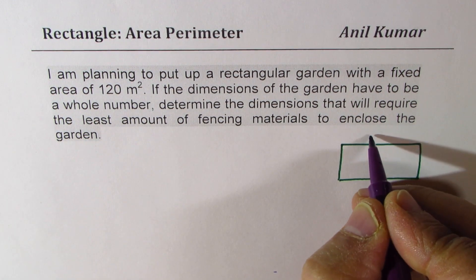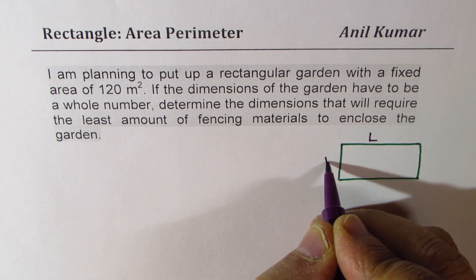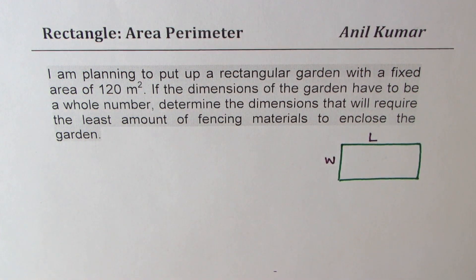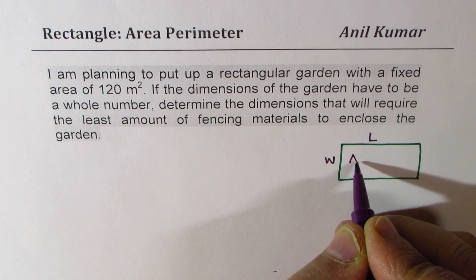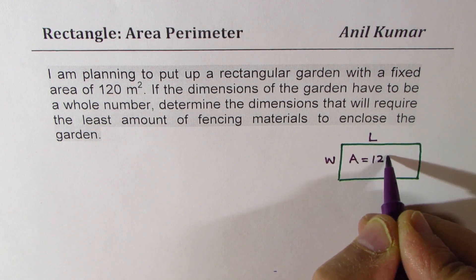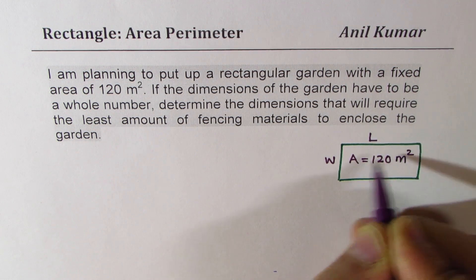Let's say L is the length of the garden, W is the width of the garden. We are given area equals to 120 meter square. So both length and width will be in meters.